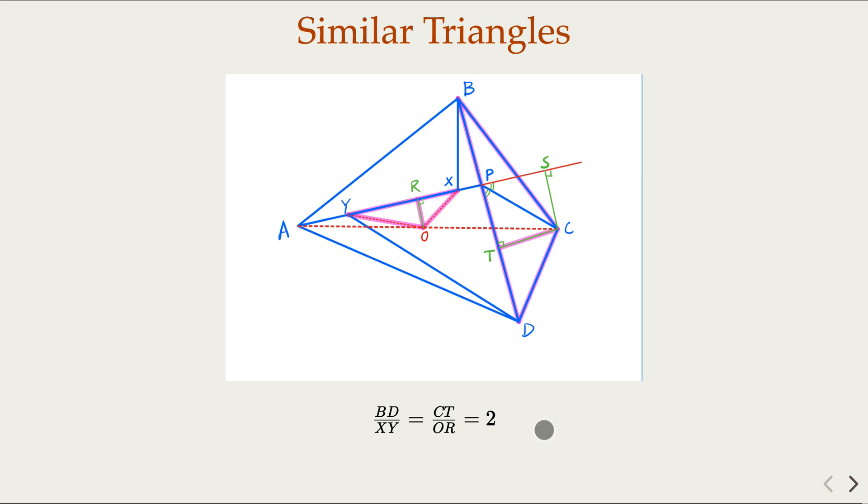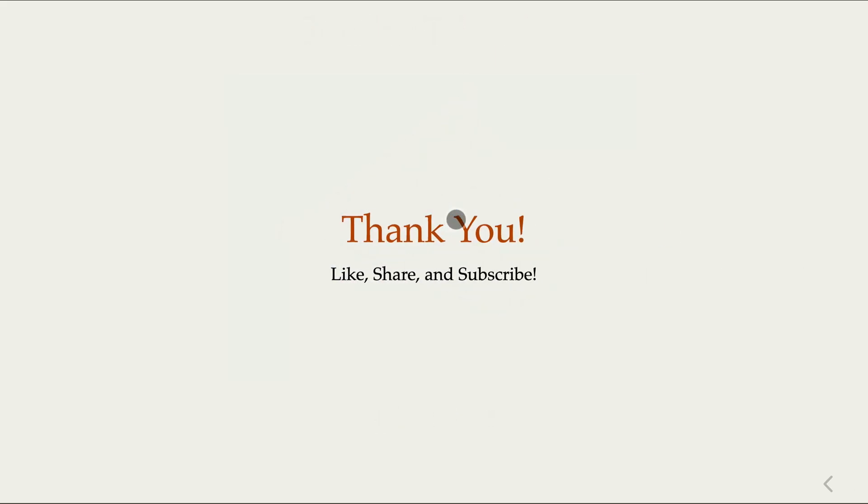As a recap, based on the given angle relationships, we argued that ABXO are on the same circle, AYOD on the same circle, and ABCD on the same circle. From there, we argued similar triangles, then made the construction so that the altitude is in a 2 to 1 ratio. From there, BD equals 2 times XY. This is an interesting problem. Hope you like and share.